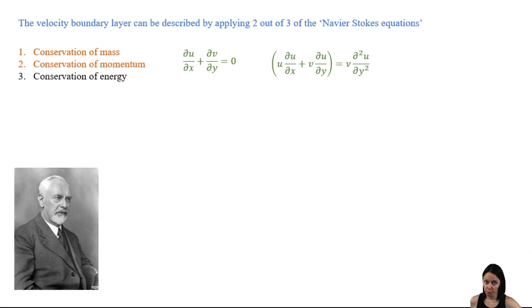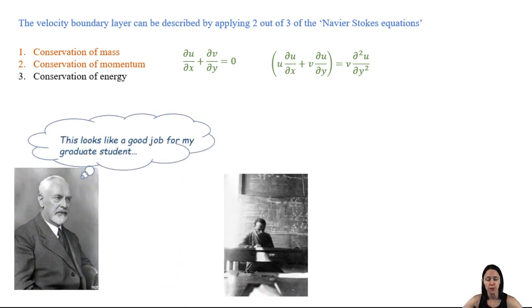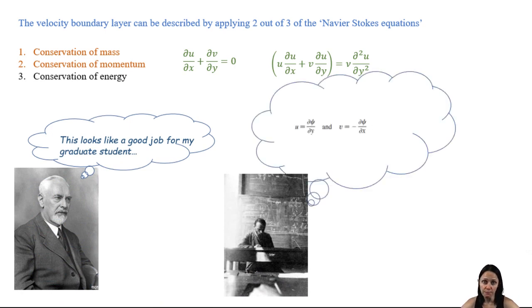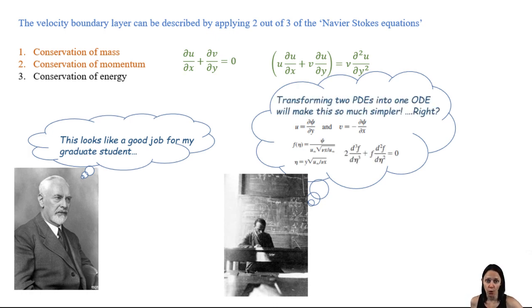Well, Prandtl, whom the Prandtl number was named for, was a professor, and his student was Blasius. So Prandtl asked Blasius to solve this problem in 1908. Prandtl defined a stream function. Then he defined a similarity variable. This allowed him to combine those two partial differential equations into a single third-order differential equation. And Prandtl thought that this mathematically improved the situation, although it doesn't look that improved to us, most likely.